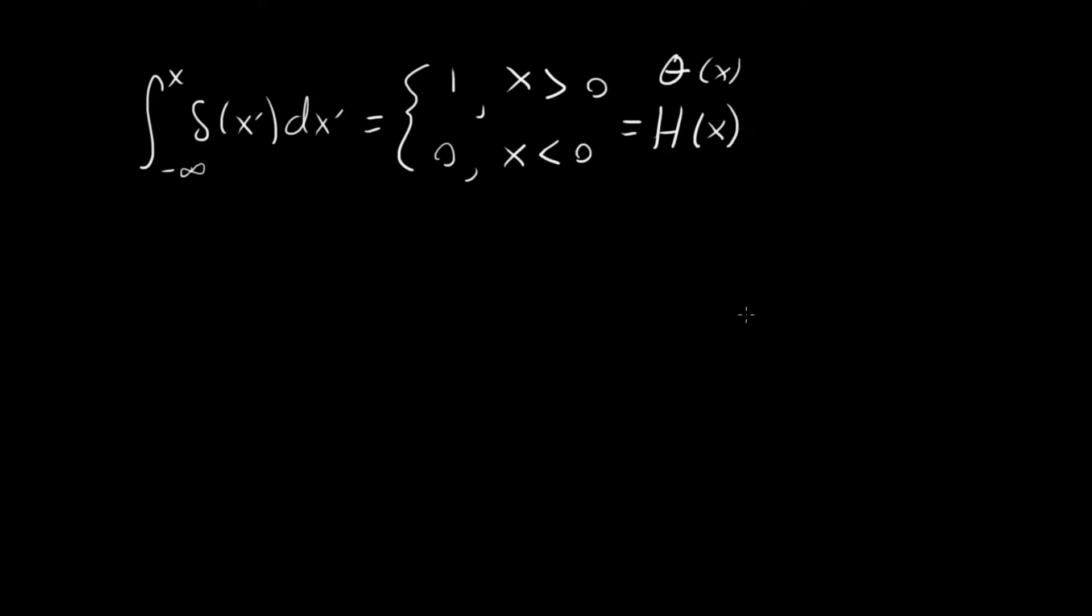So graphically, what is this function actually doing here? This function looks something like this. It's going to be equal to 0 everywhere left of the origin. And then 1 everywhere right of the origin. And I'll just say this is 1, 0, minus 1 down here. So this is our Heaviside function. This is what we get if we integrate this delta function, but we don't know exactly where we're ending up.